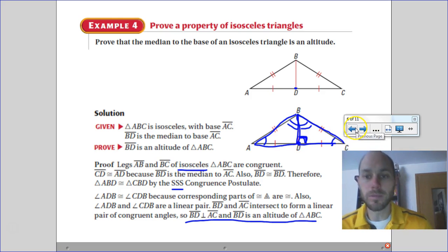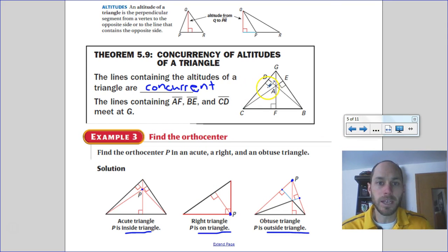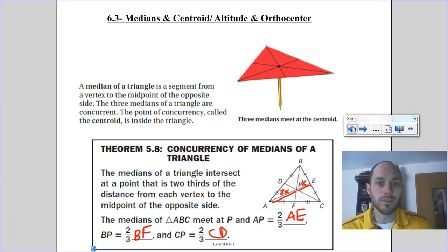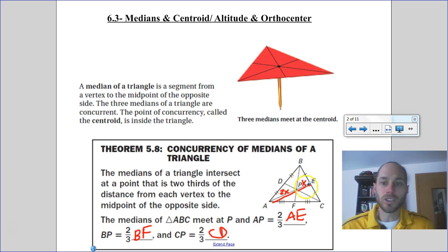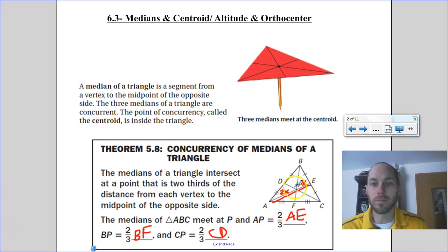So you learned about altitudes and that the orthocenter can be found inside, on, or outside the triangle. We also looked at the medians and found they meet at the centroid, with the special connection that one part of the median — from midpoint to centroid — is half the other part from centroid to vertex. You've got some practice work to do — that's all the time we have.